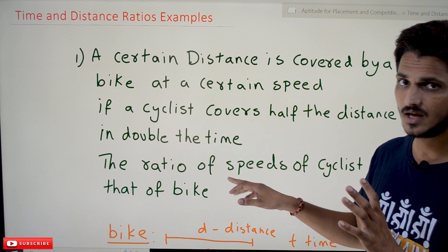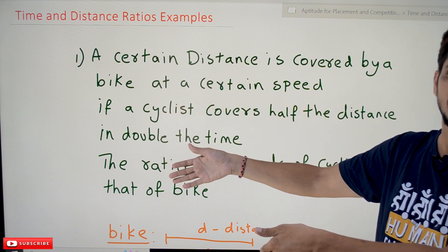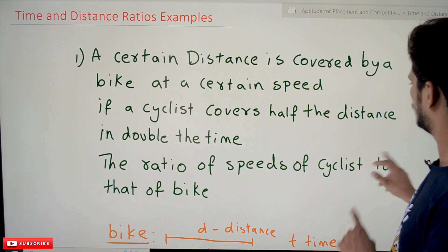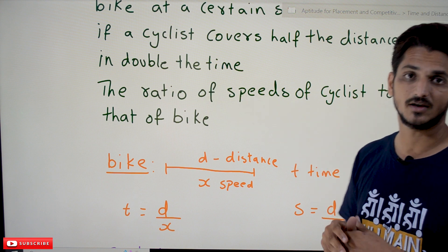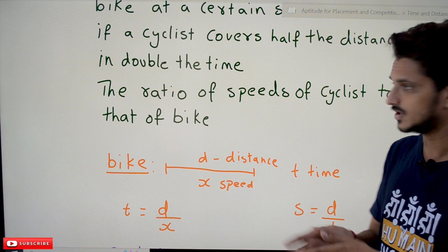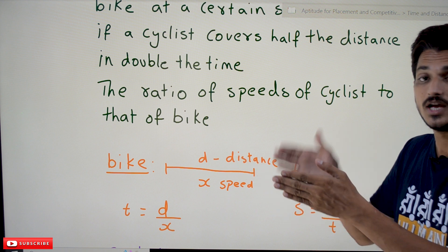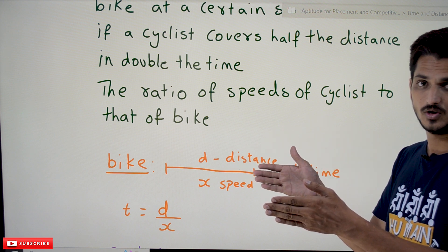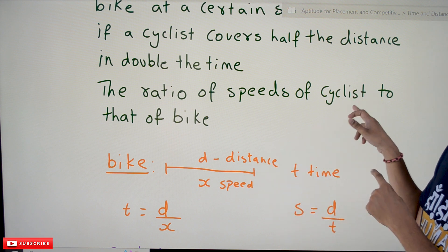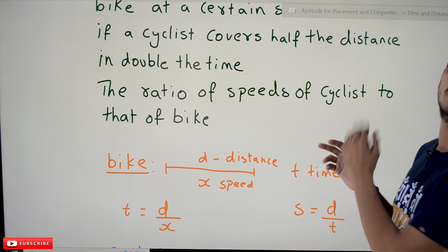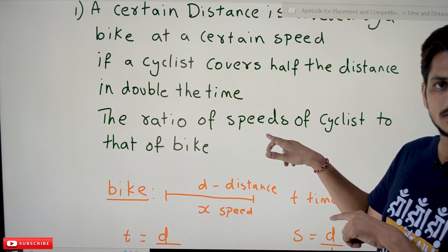So what they have mentioned is: a cyclist covers half the distance in double the time. We need to find the ratio of speeds of cyclist to bike. The important point to understand: 'cyclist to bike' means cyclist is to bike — that order matters. When you are in the exam you might forget this, so be very careful. We need to identify the speed of the bike and the speed of the cyclist.